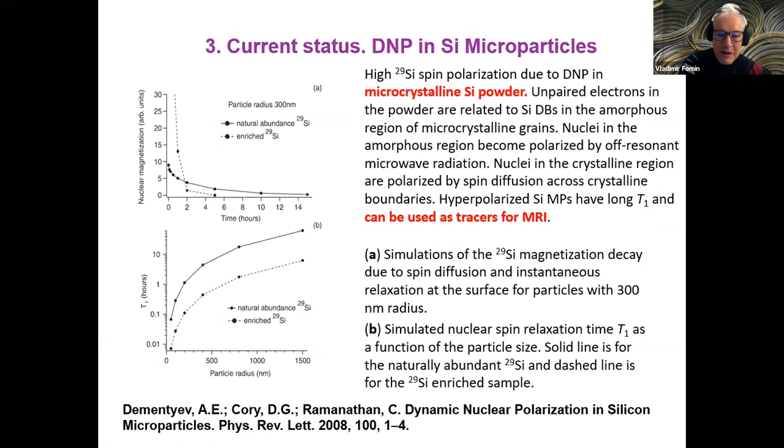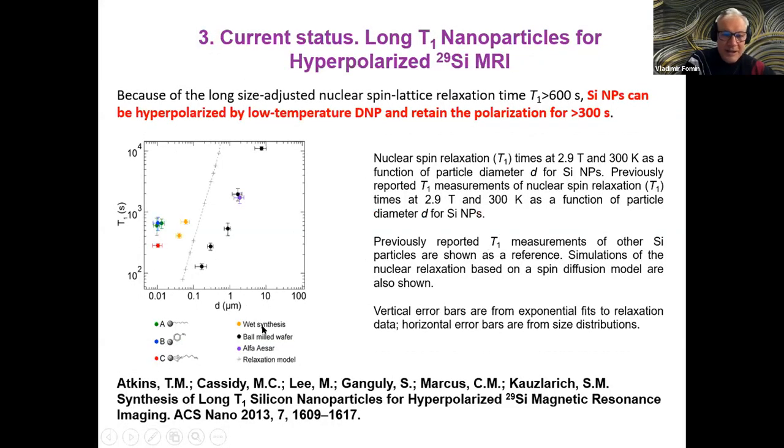In this case, I have very short time, but I nevertheless would like to bring you more recent achievements. Here it's going to microparticles, for example, in microcrystalline silicon powders. Nuclei in amorphous region become polarized by off-resonant microwave radiation while nuclei in the crystalline phase are polarized by spin diffusion. Therefore, the typical times of these polarizations can be controlled simply by the ratio of the areas with amorphous or with crystalline phase.